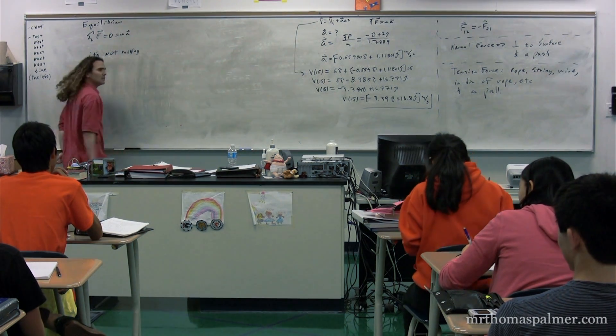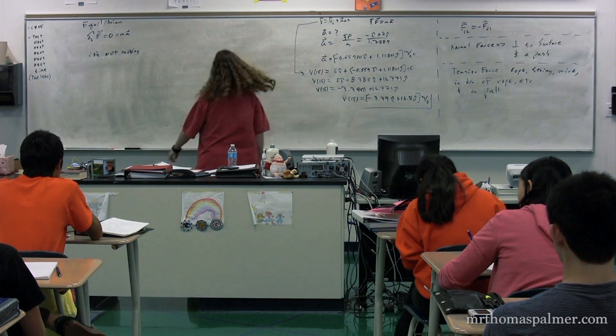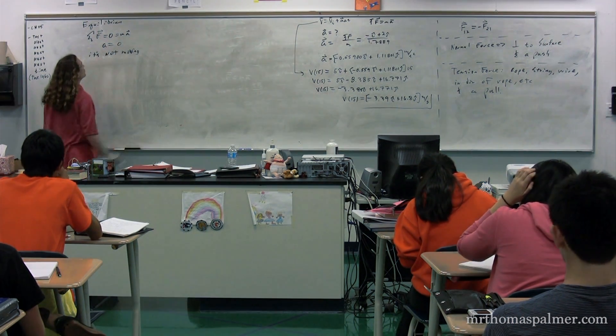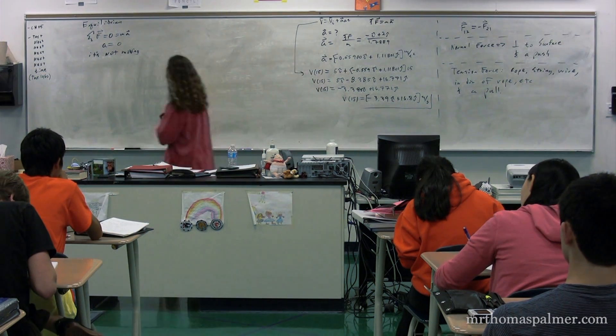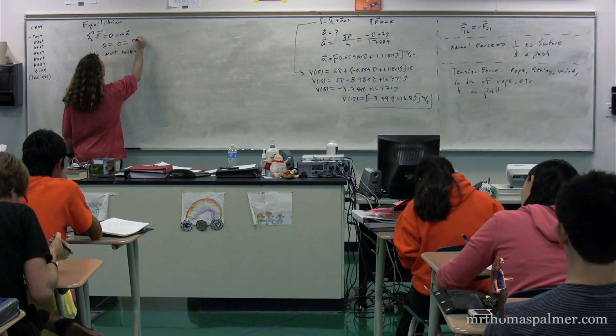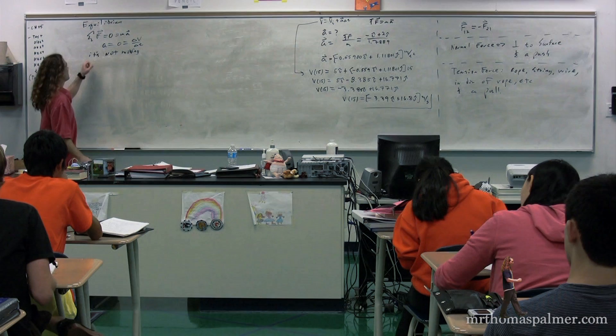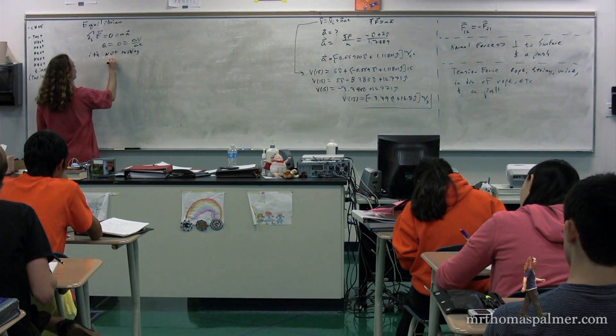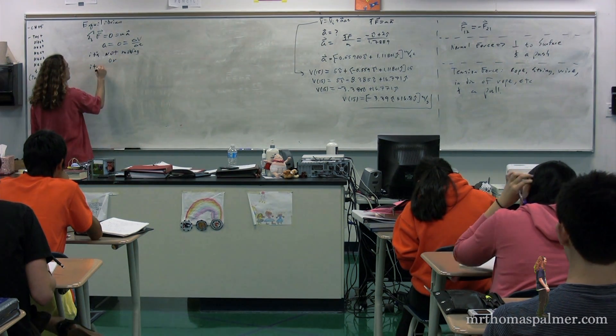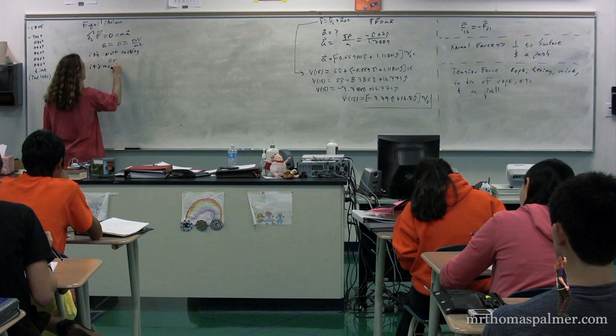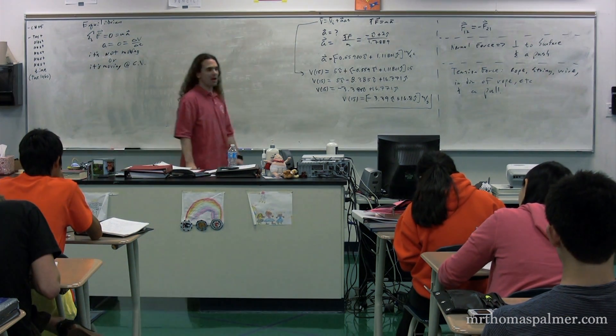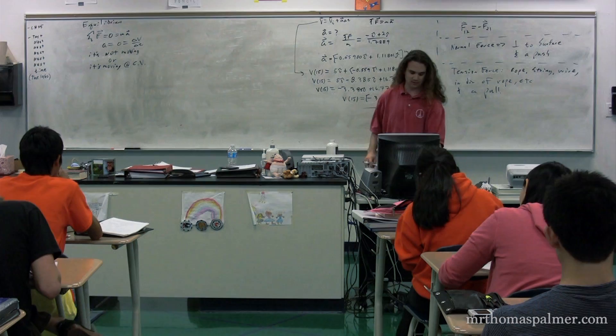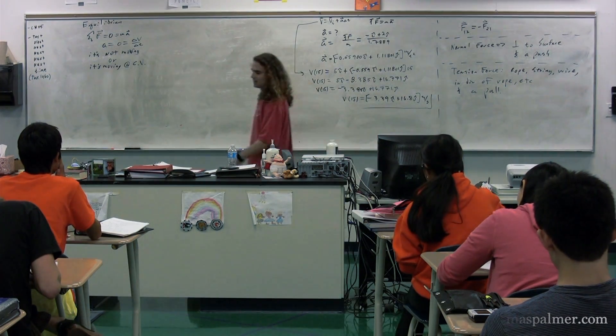Oh, good. So notice this means that the acceleration is equal to zero. Therefore, if the acceleration is equal to zero, if you recall that's equal to change in velocity over change in time, that means that it's not moving or it's moving at a constant velocity. So the object is either not moving or it's moving at a constant velocity. That's what it means to be in equilibrium.